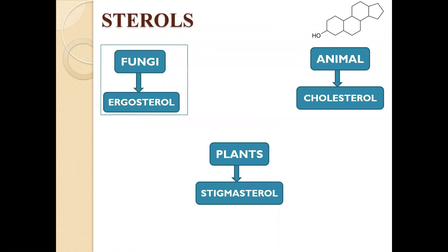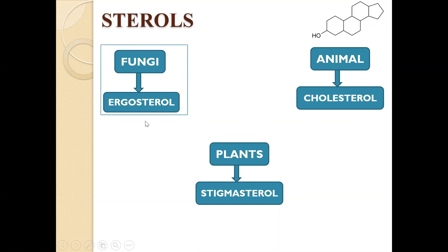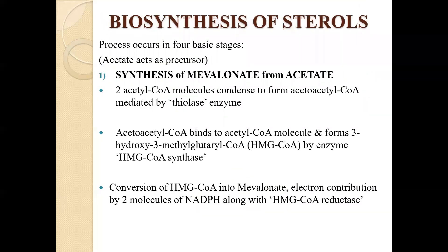Depending upon the type of organism, these sterols are of different types. If you take animals, the major sterol is cholesterol present in the cells. Similarly, in case of plants, this is stigmasterol. In case of fungi cells, you will see ergosterol. Now let us look into the biosynthesis of these sterols.